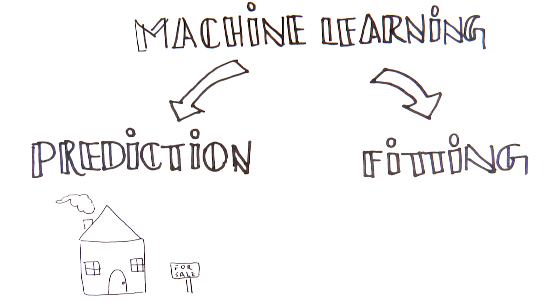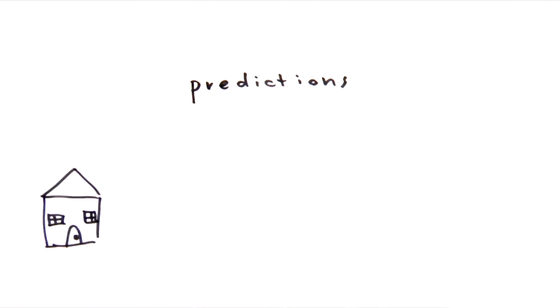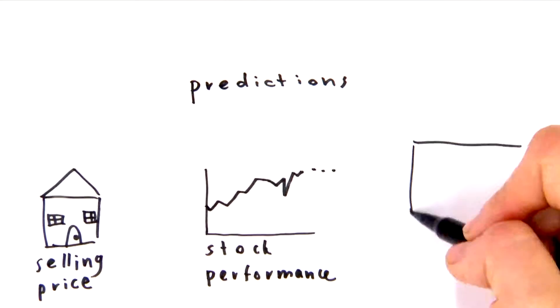Models are useful because they can make predictions about data. A common example is predicting the price of a house before it sells by using other information about the house. But other examples include predicting the stock market using recent trends or determining the best next move while playing a video game.